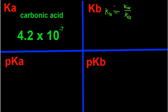And we know Kw and we know Ka. Kw is always 1 times 10 to the negative 14. Our Ka in this case is 4.2 times 10 to the negative 7.